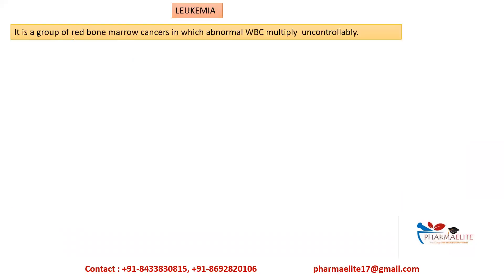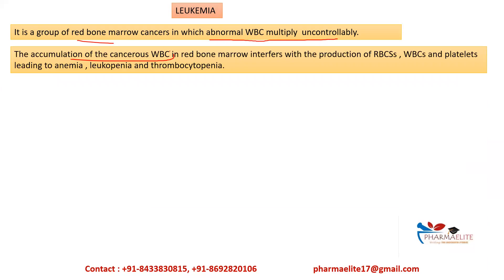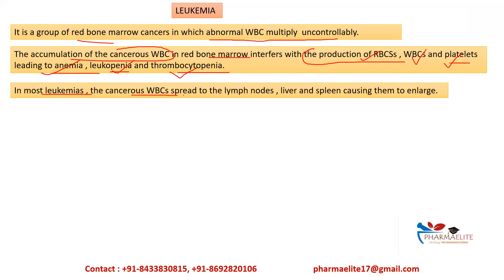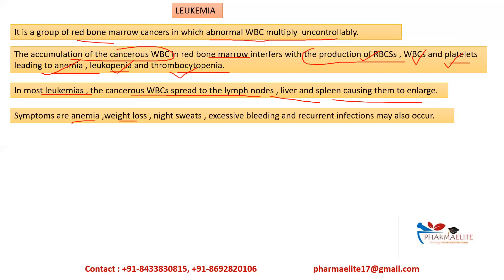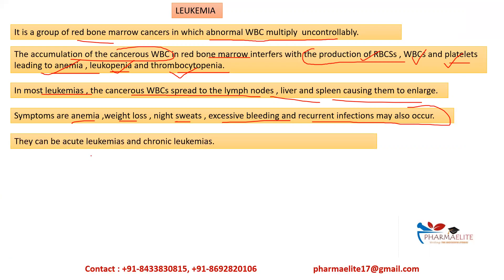Next is leukemia — a group of red bone marrow cancers in which abnormal WBCs multiply uncontrollably. The accumulation of these cancerous WBCs in the red bone marrow interferes with the production of other formed elements like RBCs, platelets, leading to anemia, leukopenia, and thrombocytopenia. In most leukemias, the cancerous WBCs spread to the lymph nodes, liver, and spleen, causing them to enlarge. Symptoms include anemia, weight loss, night sweats, excessive bleeding, and recurrent infection.